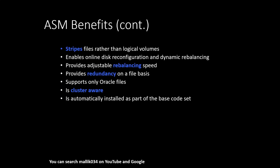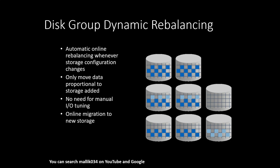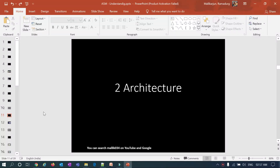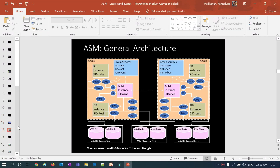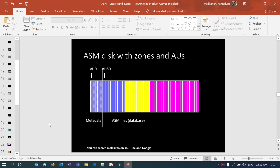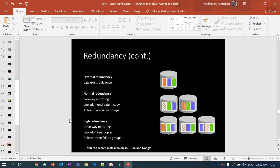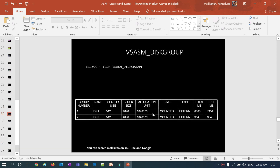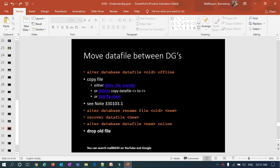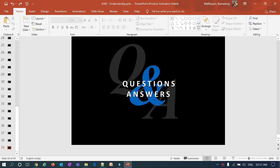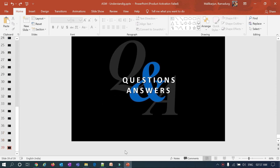That covers mirroring and striping. I'll cover the remaining topics — ASM benefits, disk group dynamic rebalancing, ASM architecture, and more — in the next sessions with live commands, showing the lab environment, creating disks, checking them at the ASM level, and comparing the ASM instance versus the database instance. Stay tuned and thank you!